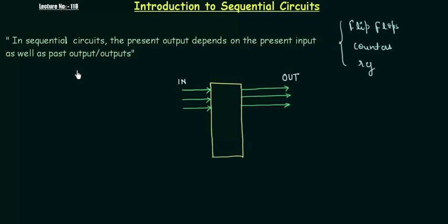So let's move to sequential circuits — what it is. When we talk about the sequential circuit, it becomes important to also talk about the combinational circuit at the same time, because half of the definition of the sequential circuit is the combinational circuit. Let's see how.